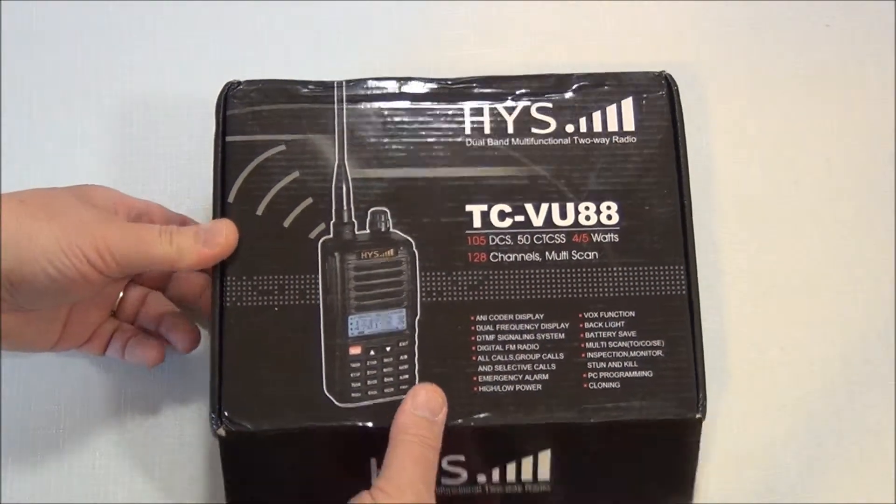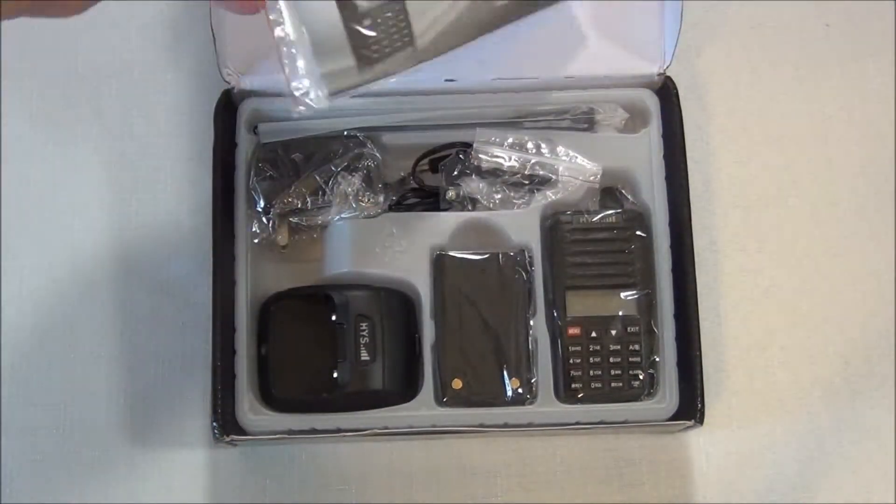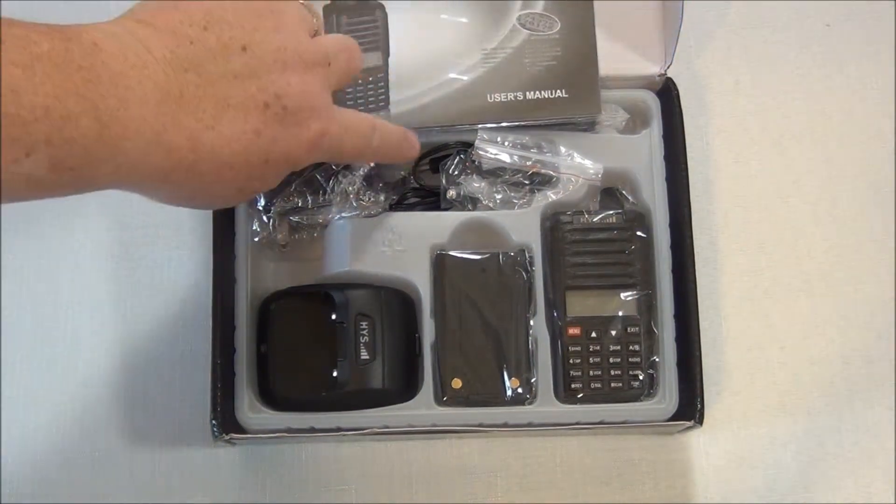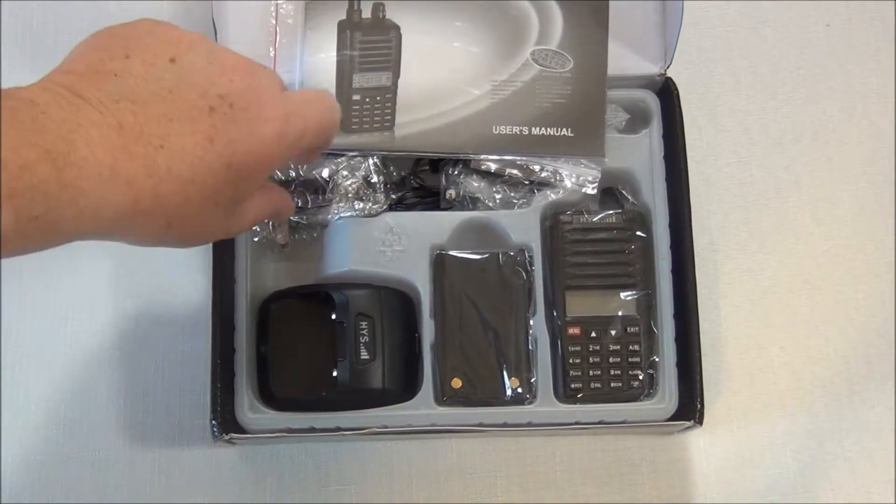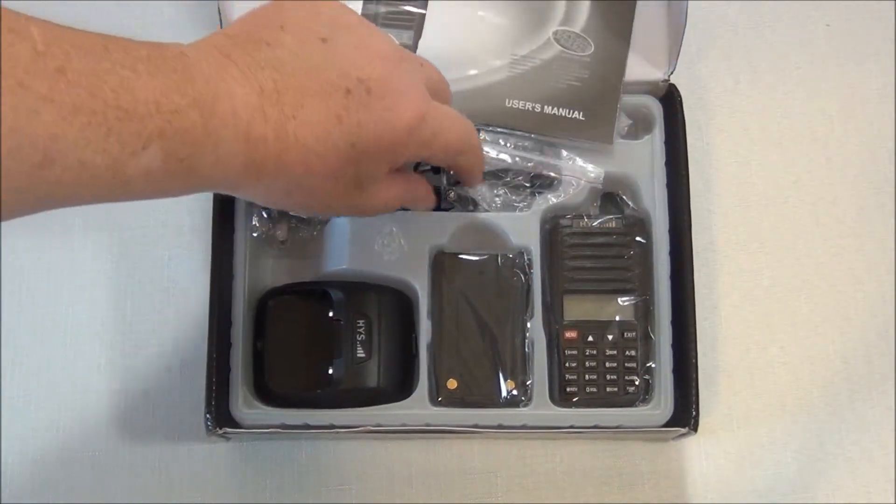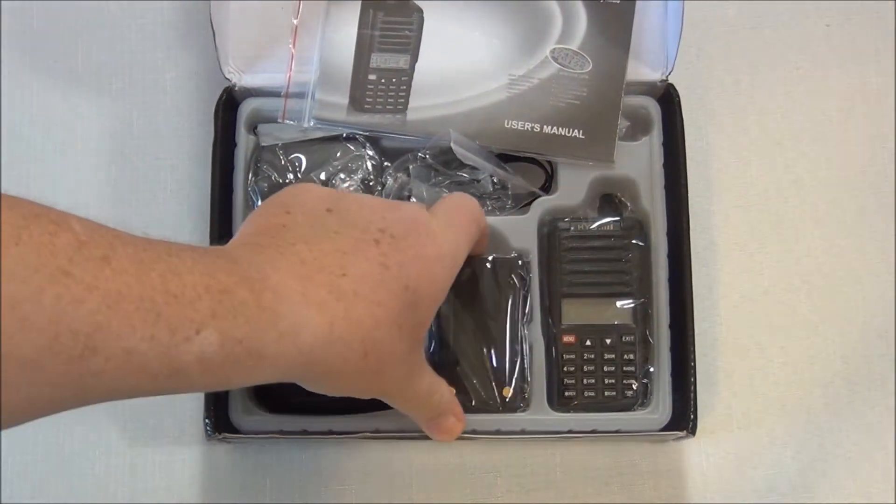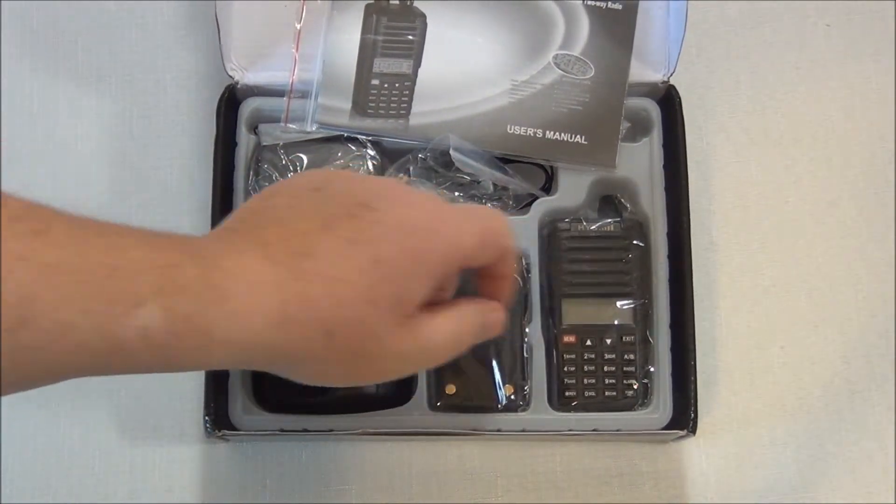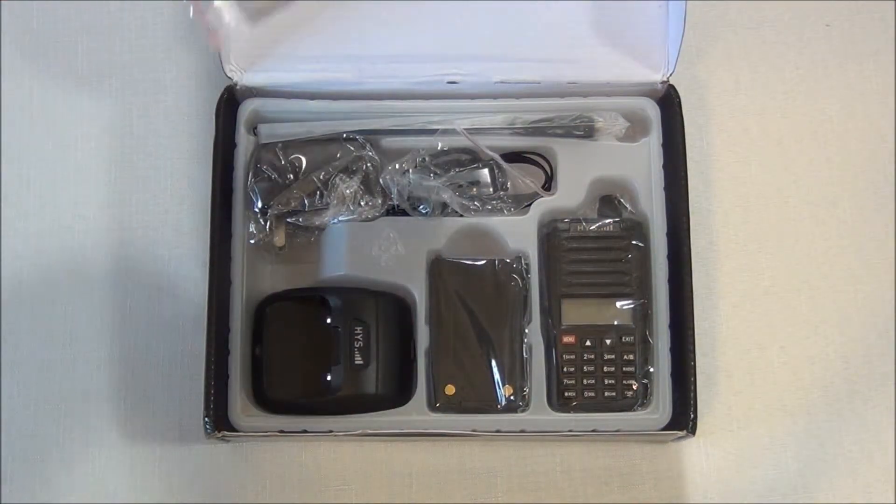If we take a look inside real quick, you'll see this is how it comes packaged. There's your manual and it's written pretty good, you can understand that pretty well. Charge base, here's the AC adapter, the belt clip, your lithium-ion battery, and the radio itself. This is the antenna up here, this is the way it looks in the box when you first open it.